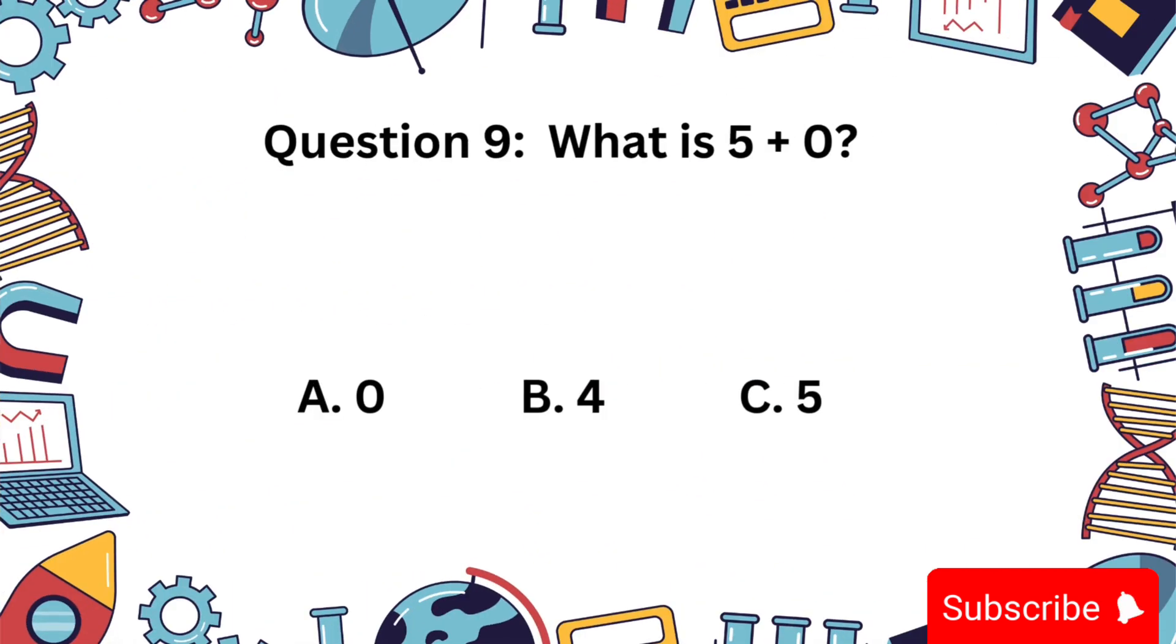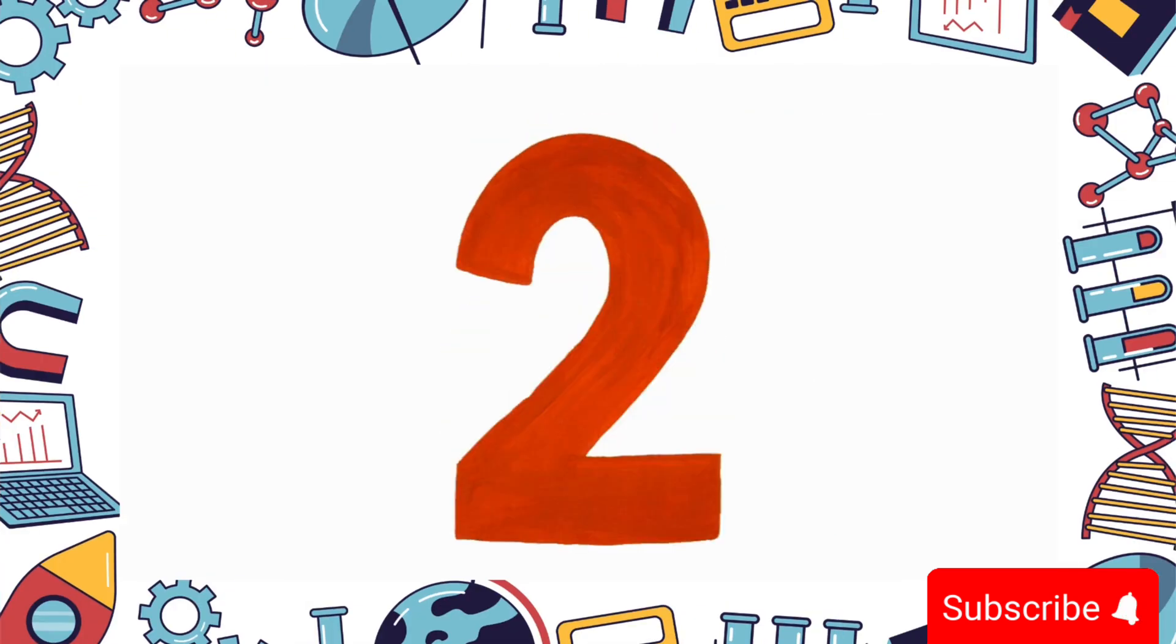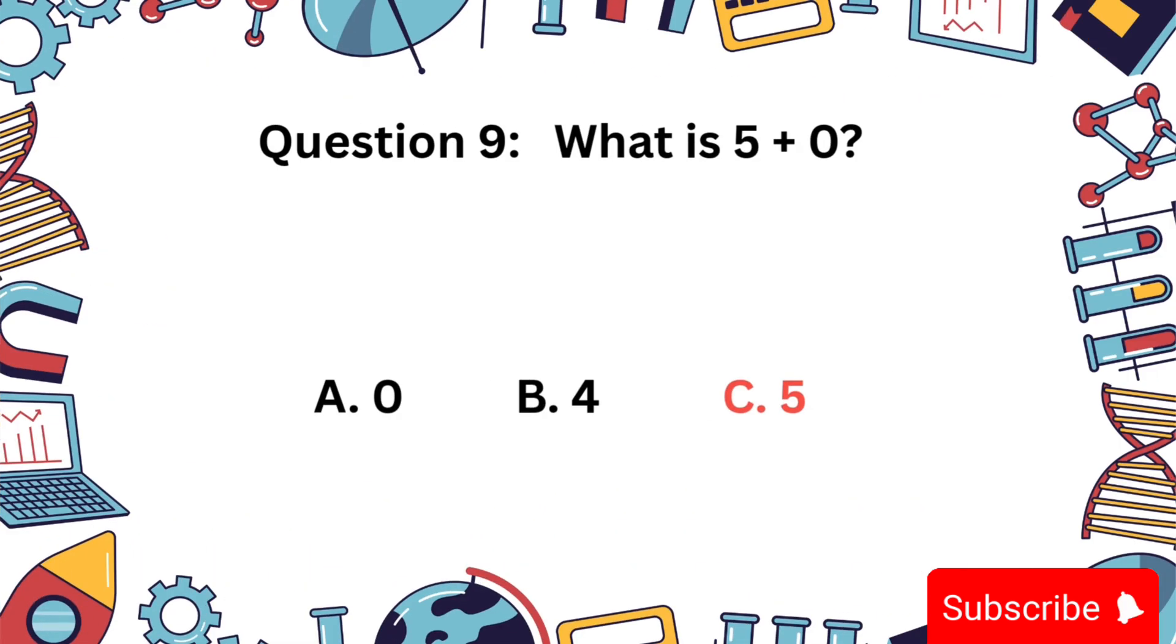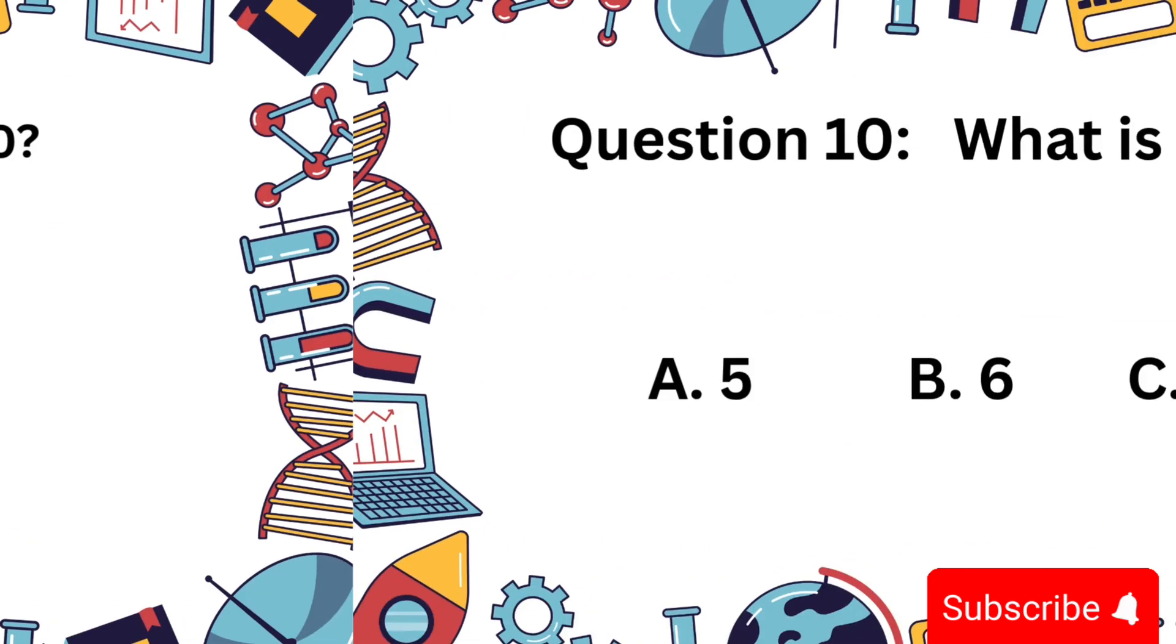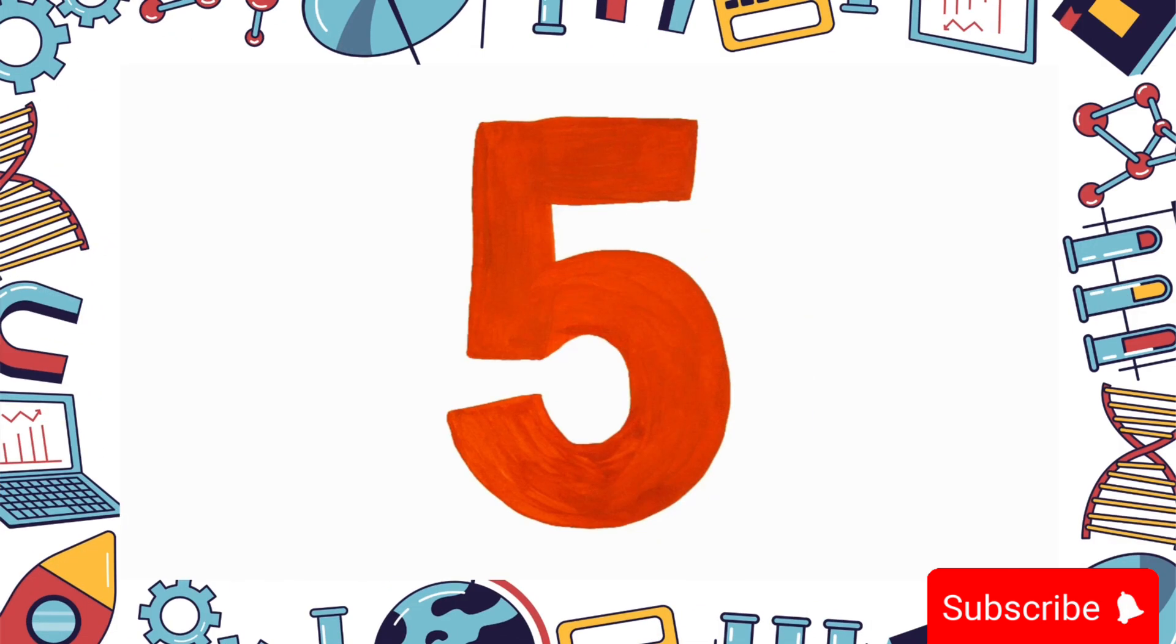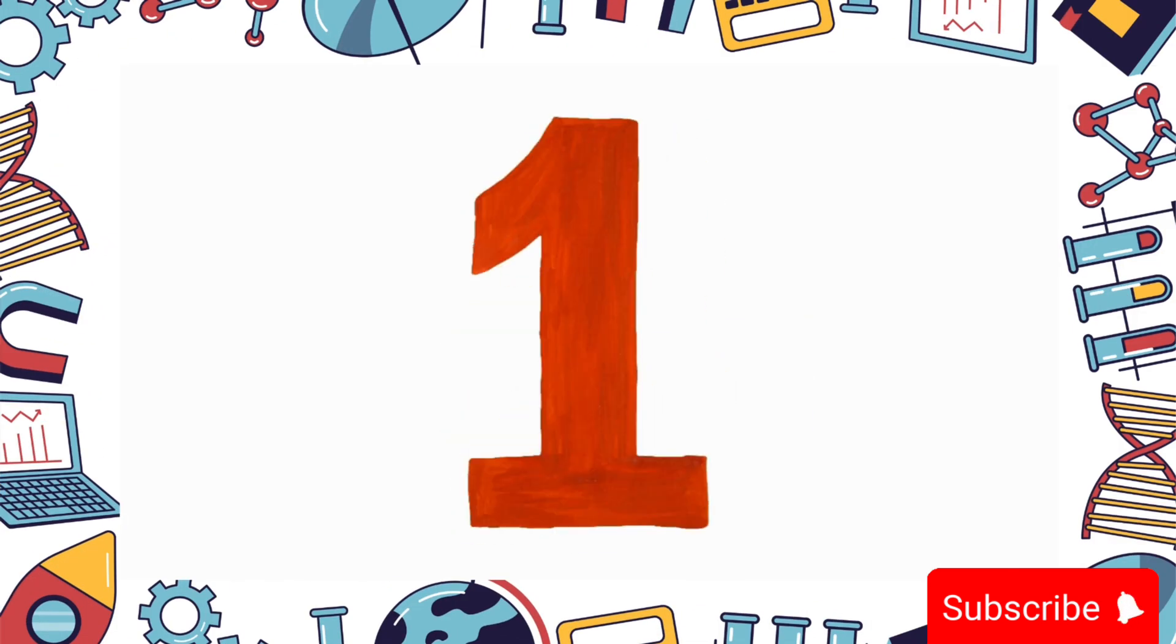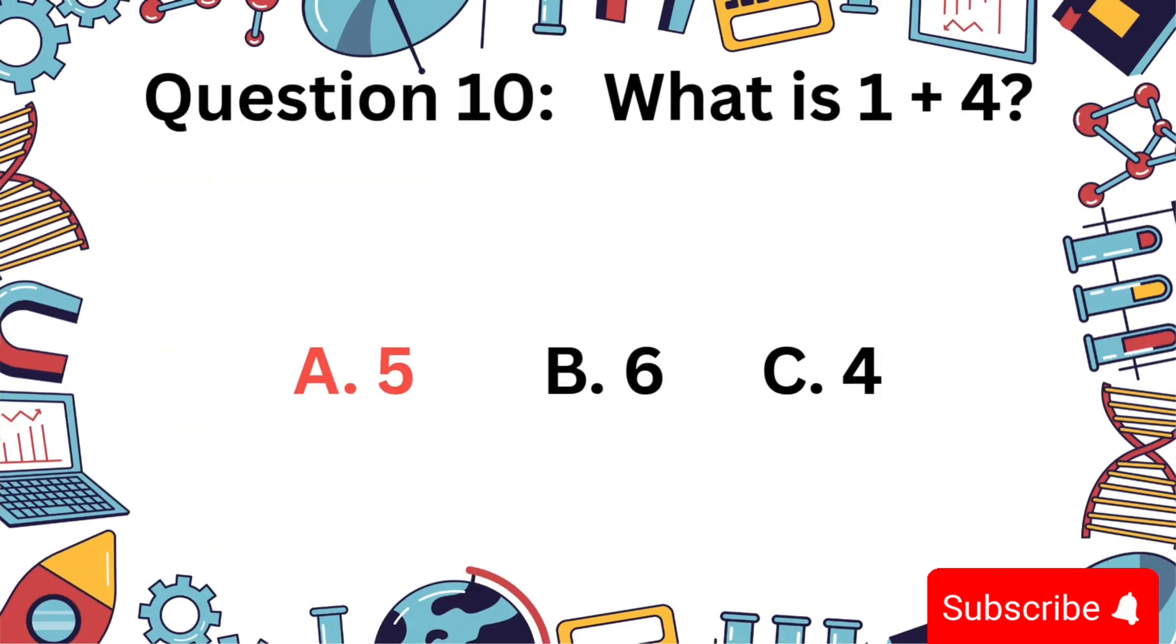What is 5 plus 0? 0, 4, or 5? Correct answer: 5. Here we go. 1 plus 4. Is it 5, 6, or 4? Correct answer: 5.